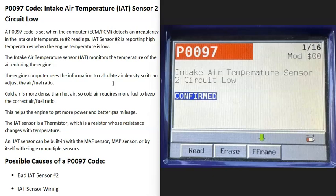Today I'm talking about a P0097 code, what it is and how you go about fixing it. A P0097 code is Intake Air Temperature Sensor 2 Circuit Low. What does this mean?